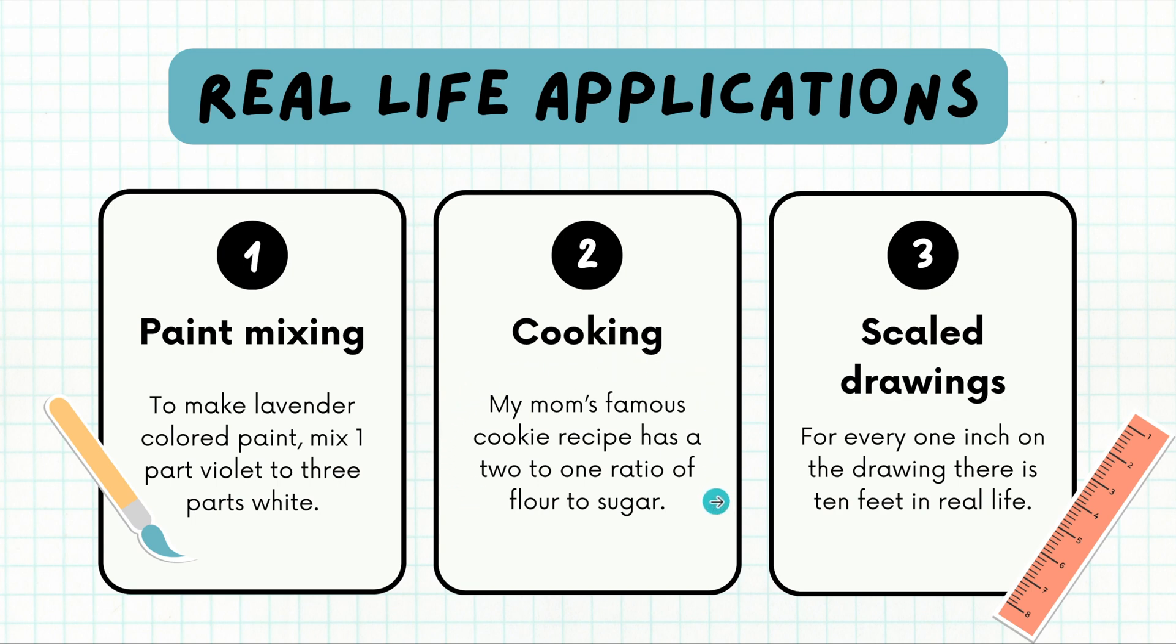You also might use this when you're cooking. I cook all the time, and all the time I have to put my measurements into ratios. My mom's famous cookie recipe has a 2 to 1 ratio of flour to sugar. So that means that they have more flour, because there are two parts flour to one part sugar.